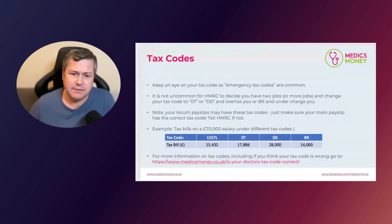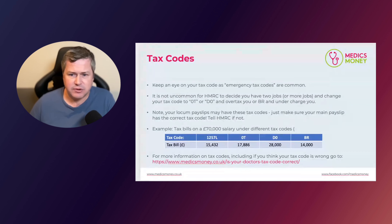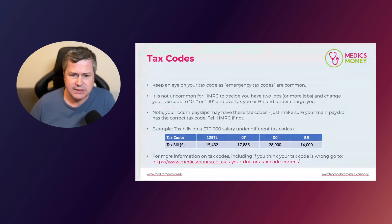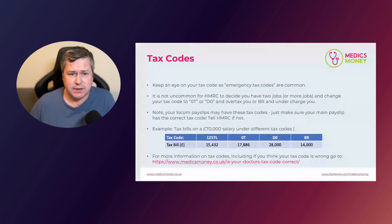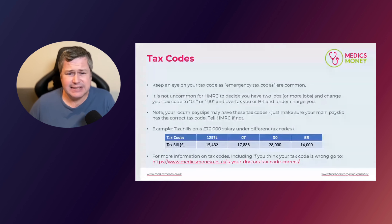Definitely check your main payslip. You may see emergency codes on locum payslips where you have extra income, and that may be fine. But check your main payslip — if you see code 0T or D0 on there, you are almost certainly paying too much tax. The table on screen compares a normal tax code with these three emergency tax codes, showing a significant overpayment of tax with a 0T or D0 code.